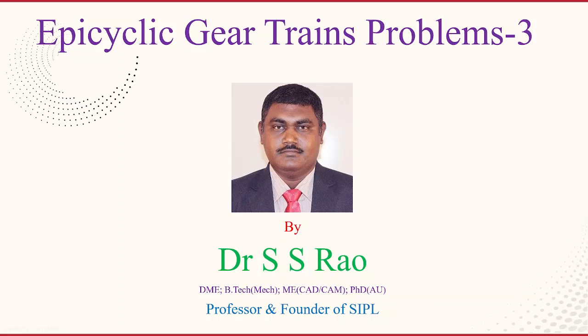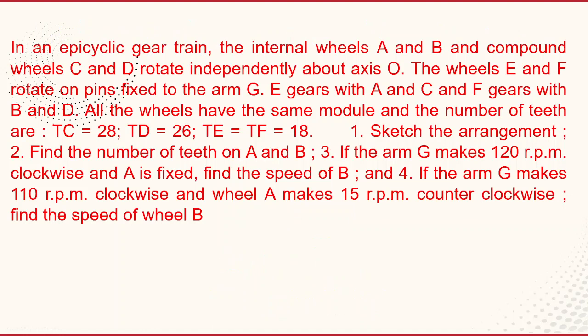In this video, I am going to explain epicyclic gear train problems. Let us first see the problem. In an epicyclic gear train, the internal wheels A and B and compound wheels C and D rotate independently about axis O. The wheels E and F rotate on pins fixed to the arm G. E gears with A and C, and F gears with B and D.